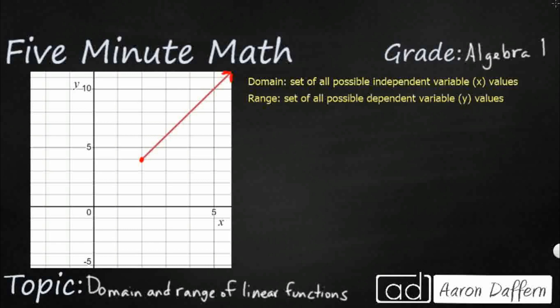So we see a little portion of a coordinate plane here, and we see a ray. We've got this endpoint right here, and it looks like it's got an x value of 2 and a y value of 4. So we've got that point (2, 4), and then it just goes on forever.